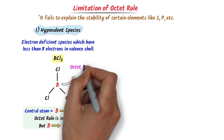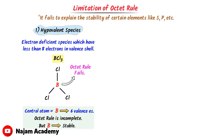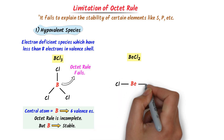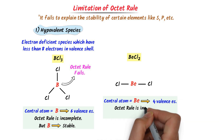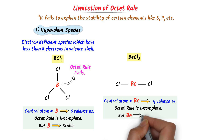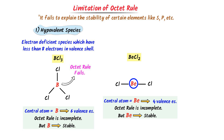Thus, it is a limitation of the octet rule that it cannot explain the stability of boron. Secondly, consider beryllium chloride (BeCl₂). In this molecule, beryllium is the central atom bonded to two chlorine atoms with no lone pair on beryllium. Beryllium has only four electrons — its octet is incomplete — but it is still stable. Beryllium is an electron-deficient species, and this is a limitation of the octet rule which cannot explain its stability.